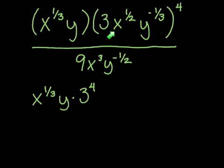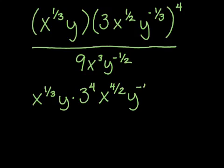Next, x to the 1/2 raised to the fourth power. The power rule for exponents tells us that when we have an exponent raised to another exponent, we multiply those two exponents together. So that gives us x raised to 1/2 times 4, which is 4/2 — we'll simplify that in a moment. Then y to the negative 1/3 raised to the fourth power: multiplying those exponents gives y to the negative 4/3.